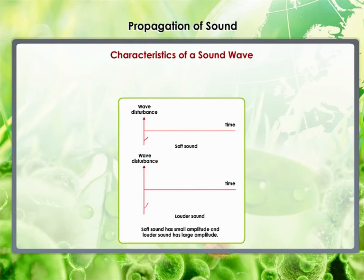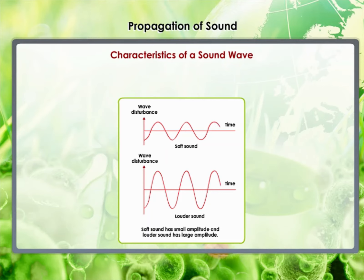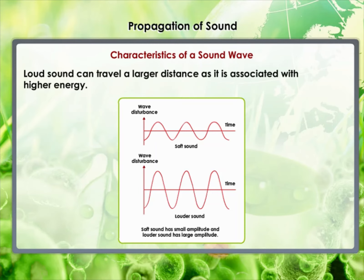Objects of different sizes and conditions vibrate at different frequencies to produce sounds of different pitch. The magnitude of the maximum disturbance in the medium on either side of the mean value is called the amplitude of the wave. The loudness or softness of a sound is determined basically by its amplitude. The amplitude of the sound wave depends upon the force with which an object is made to vibrate. Loud sound can travel a large distance as it is associated with higher energy. As a sound wave spreads out from its source and moves away, its amplitude as well as its loudness decreases.